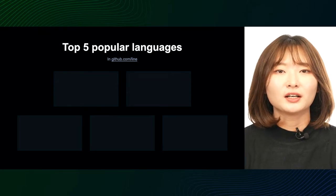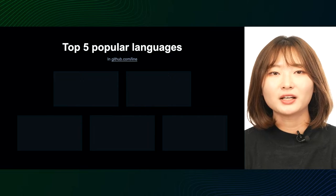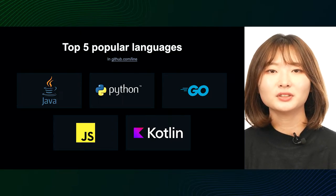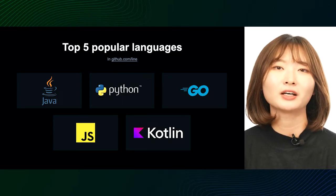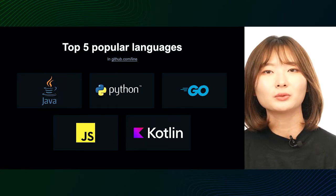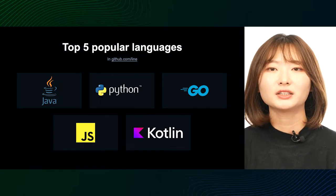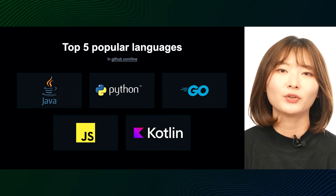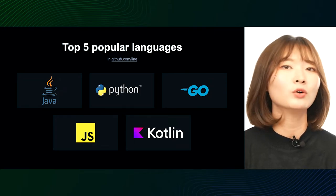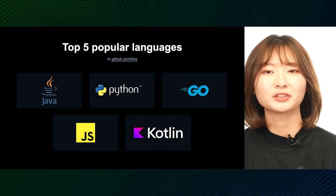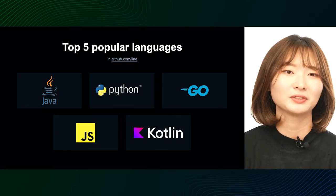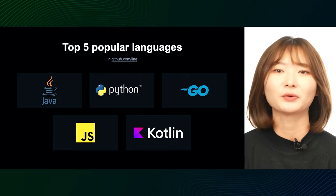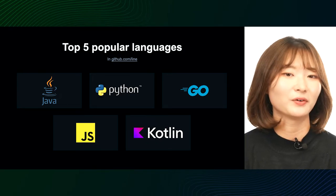The following looks at the most used programming languages across all repositories LINE is currently running. In terms of the number of repositories, Java, Python, and Go languages accounted for the largest share, followed by JavaScript and Kotlin. As far as I can remember, up until last year Java was overwhelmingly dominant, but amongst the newly released open sources this year, Python and Go languages seem to be more popular. We'll have to see what changes next year as it will probably shift according to the programming trend.